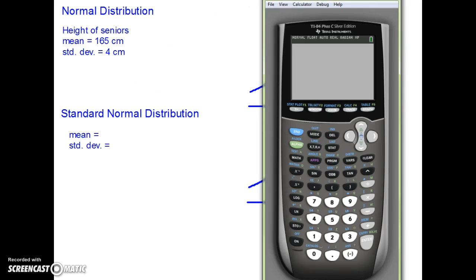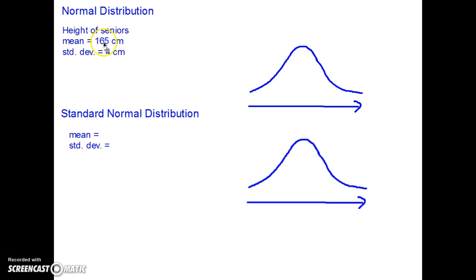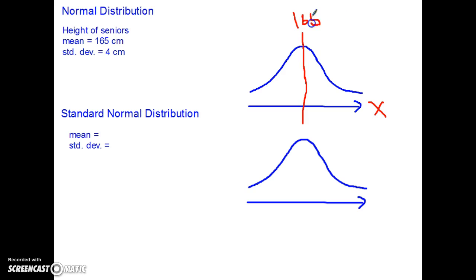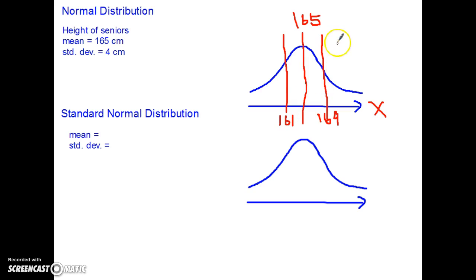Now let's say today I collected all the data and my mean turns out to be 165, and my standard deviation turns out to be 4. So on my normal distribution graph — my bell curve — this is my random variable x. My mean is 165 and my standard deviation is 4 cm, which means one standard deviation above is 169 (165 plus 4), and one standard deviation below is 161.